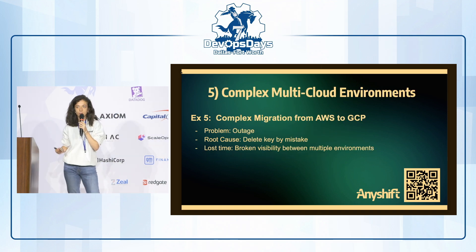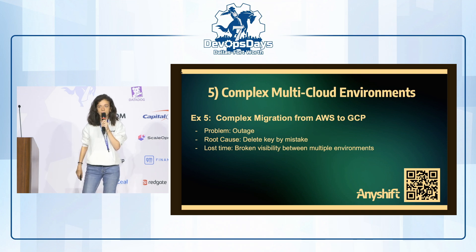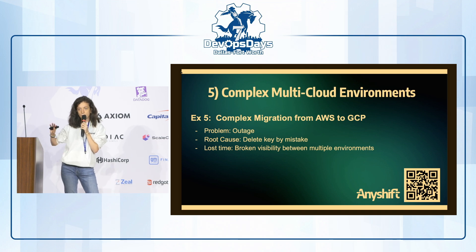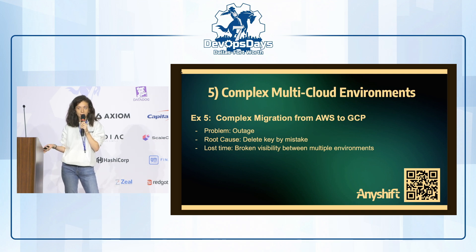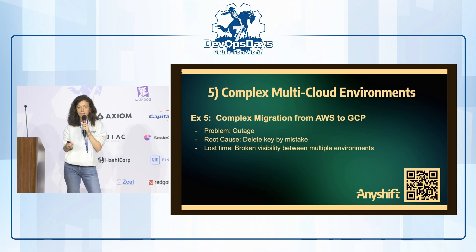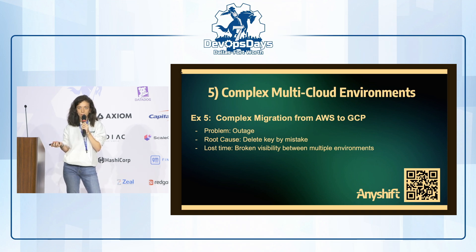The fifth reason is about multiple and complex environments — multi-cloud. Your company can be on multiple clouds for redundancy or compliance reasons, and it's hard to manage and understand what has happened. A specific example is a company that had to migrate from AWS to GCP and had to change all their accesses from one cloud to another. An SRE doing that made a mistake by deleting a key, causing an outage — still due to bad visibility between multiple cloud environments.